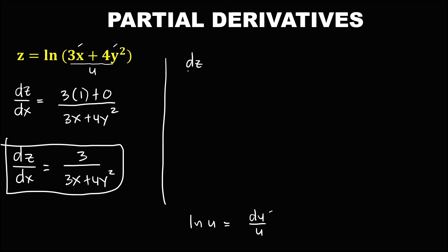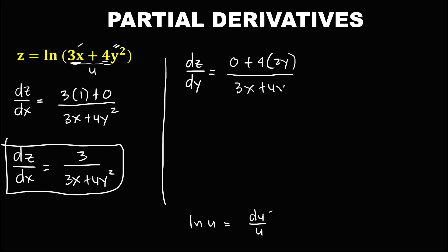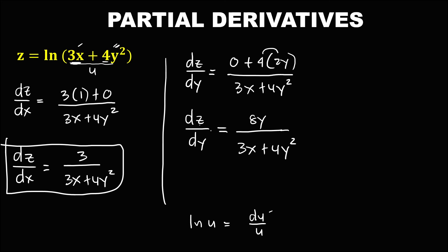For the derivative of z with respect to y, we assume that x is a constant. For the first term, since there is no y, it is constant and the derivative of a constant is 0. Then plus, bring down the constant times the derivative of y squared, which is 2y. Over 3x plus 4y squared. To simplify, the derivative of z with respect to y equals 8y over 3x plus 4y to the power 2.